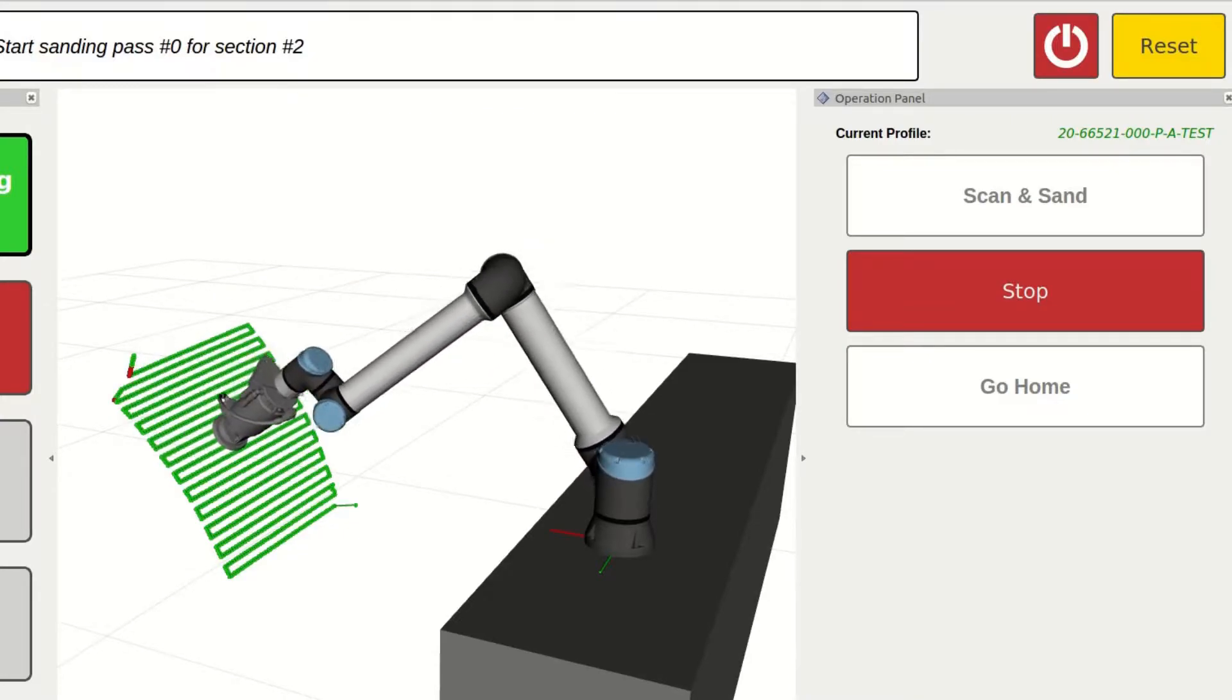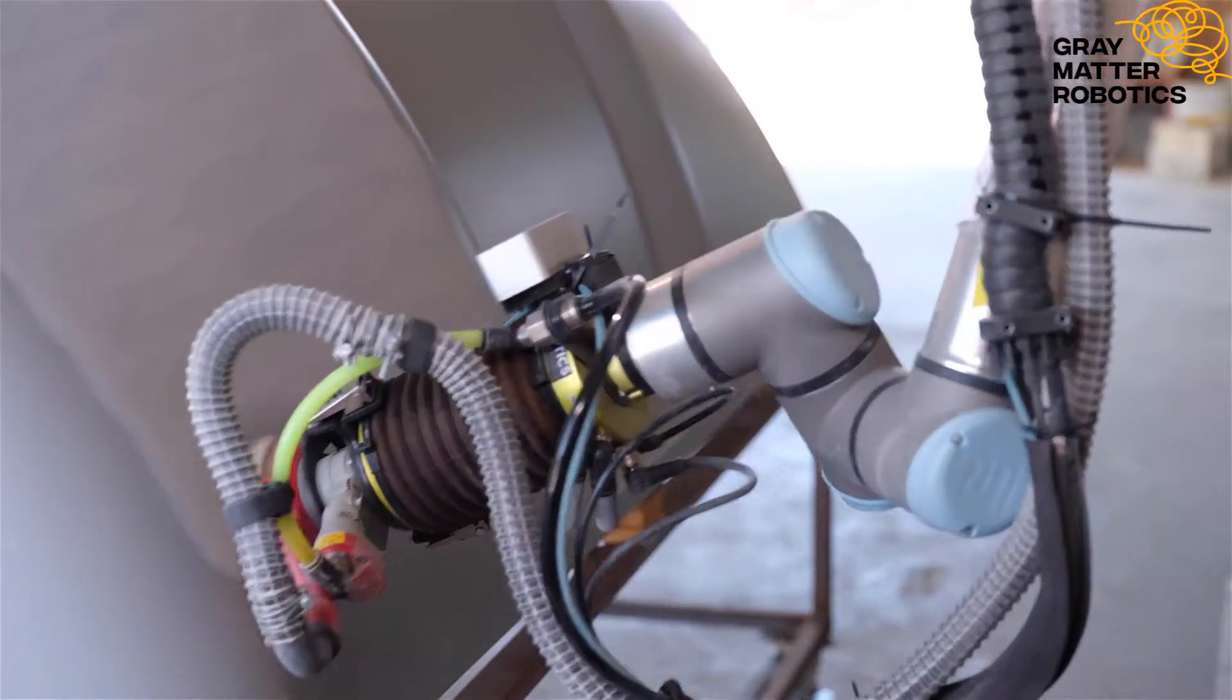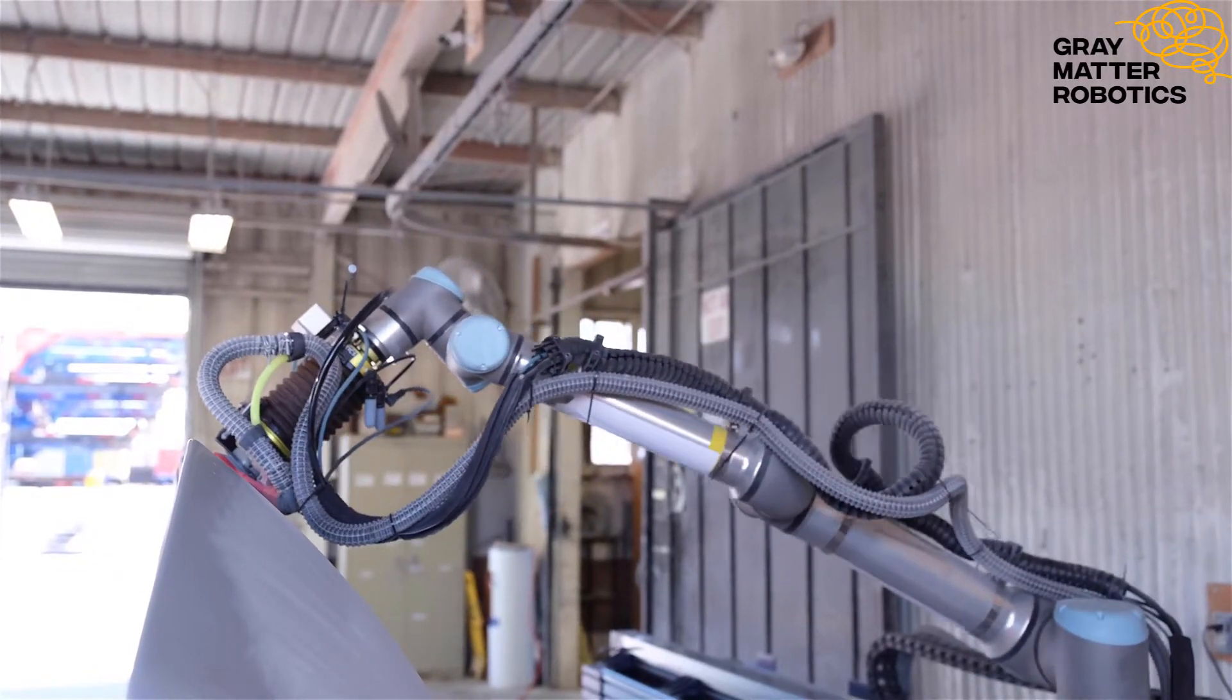After scanning, it automatically generates the 3D geometry of the part and generates the robot motion to sand the surface of the part.